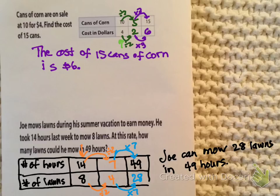All we're talking about today is how to go from one number to another when they don't go evenly into each other. We think about whether there's a way to reduce the two numbers in the column by scaling back. Sometimes you may even have to scale up first, then scale back — you never know.